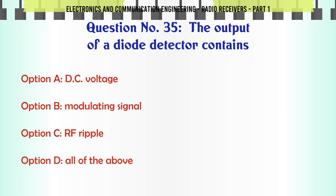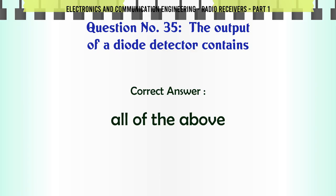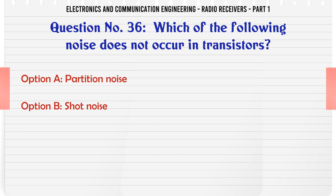The output of a diode detector contains: A. DC voltage. B. Modulating signal. C. RF ripple. D. All of the above. The correct answer is all of the above.